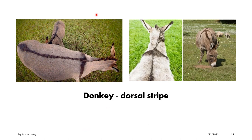The dorsal stripe or dorsal line begins at the base of the mane and follows the spine down their backs towards the tail. There is also a shoulder stripe that runs across the shoulders from one shoulder across the back to the other shoulder. Donkeys have crosses on their back, and this characteristic is also known as the cross — it is a trait passed down genetically throughout history to modern-day donkeys.